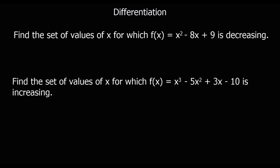Here are another two questions — pause the video, give them a go, then I'll go through the answers. The first one: find the set of values of x for which the function is decreasing. The function is decreasing when dy/dx is negative, less than zero. So we need to find the gradient function — find dy/dx first. The gradient function is found by multiplying by the power and taking one off the power, giving us 2x minus 8.